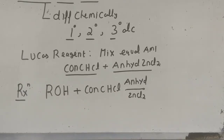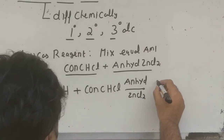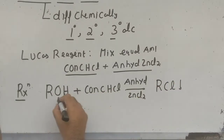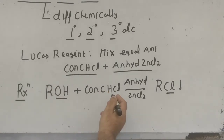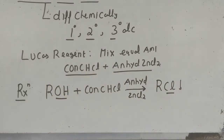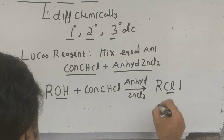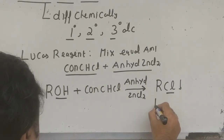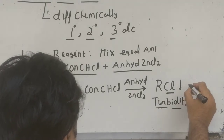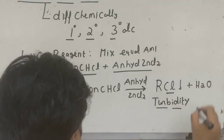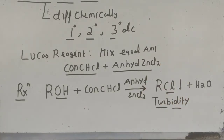When you mix the two colorless liquids, the mixture in the test tube is initially colorless. But as the reaction proceeds, the —OH group is replaced by —Cl, forming an insoluble alkyl chloride (RCl). The solution then becomes hazy — just like putting a drop of milk in water. You get cloudiness or turbidity due to the formation of this insoluble RCl.